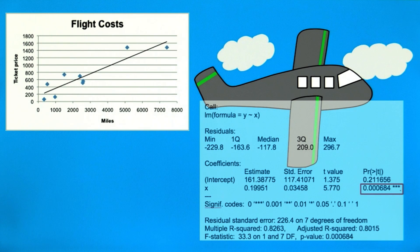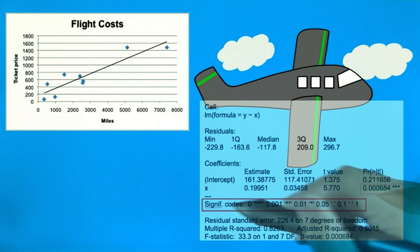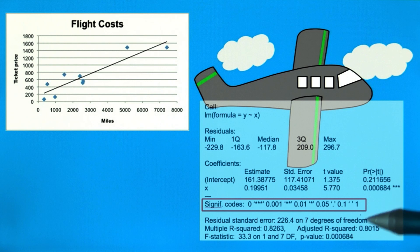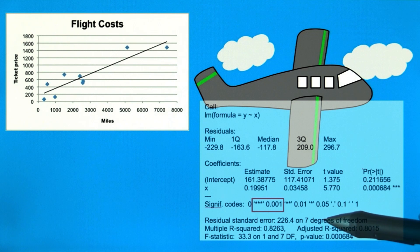And the p-value is pretty small. There are three stars by it, indicating that the p-value is small enough to reject the null. Here are the significance codes, which list the alpha levels. We see that three stars means we can reject the null at the significance level of 0.001.